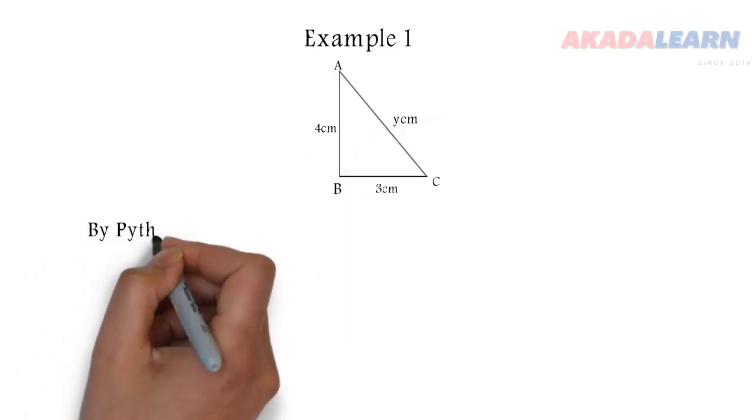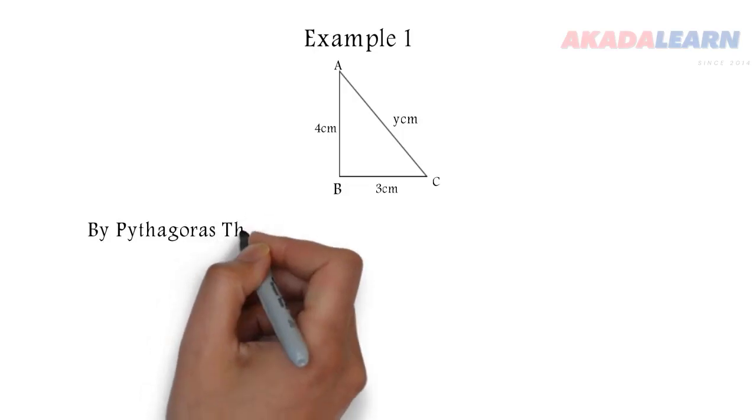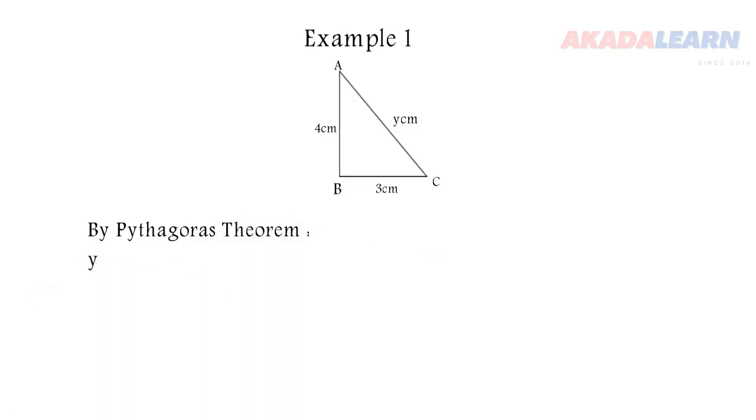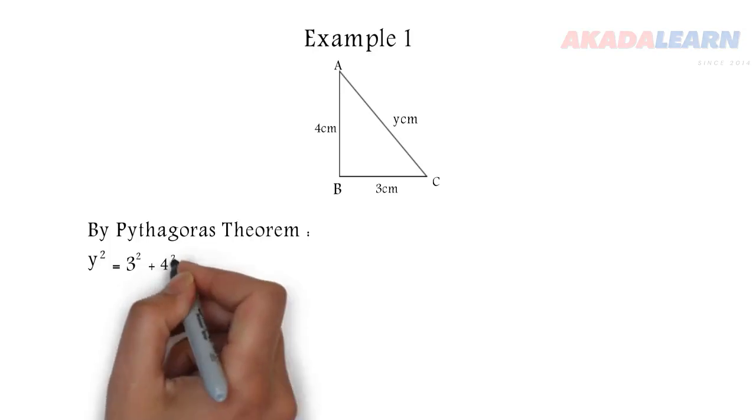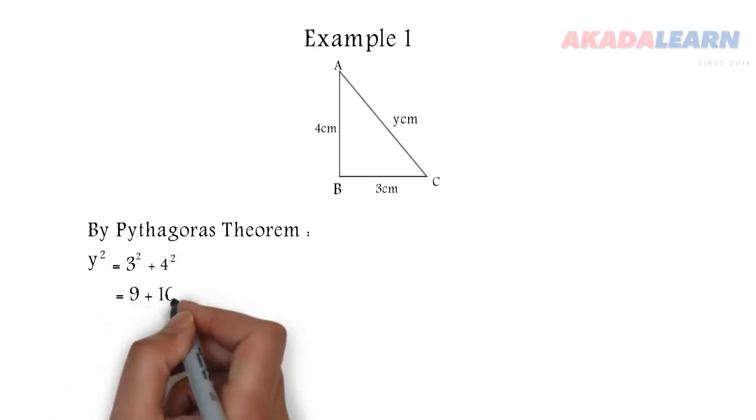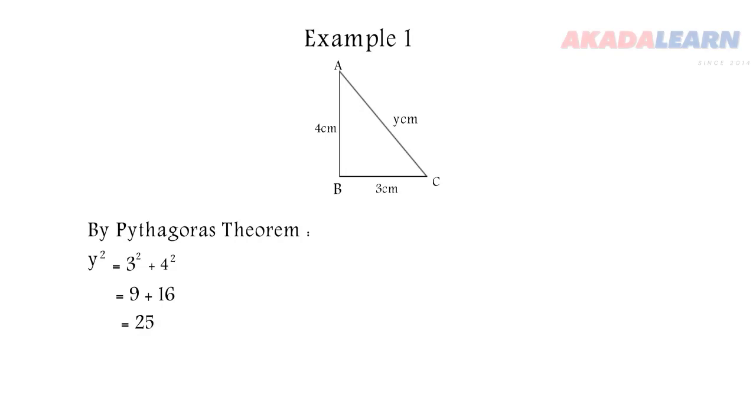We're going to apply Pythagoras' theorem: y² = 3² + 4². So 3² is 3 times 3, which is 9. 4² is 4 times 4, which is 16. So y² is 25. When you take the square root of both sides, y equals 5.